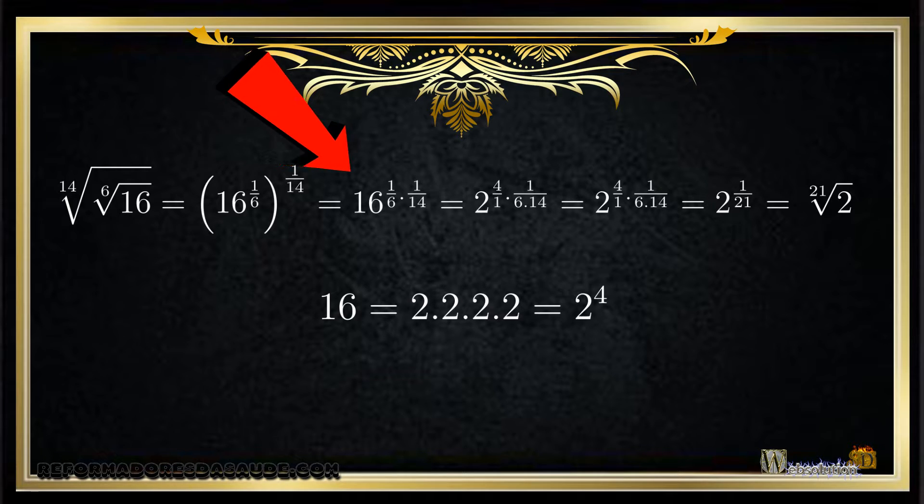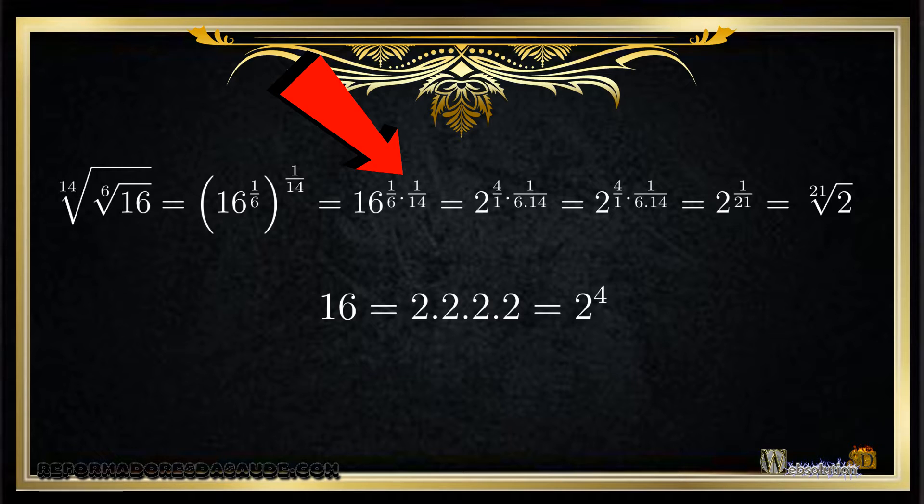Multiplying the exponents, we have 16 to the 1 divided by 6 times 1 divided by 14.